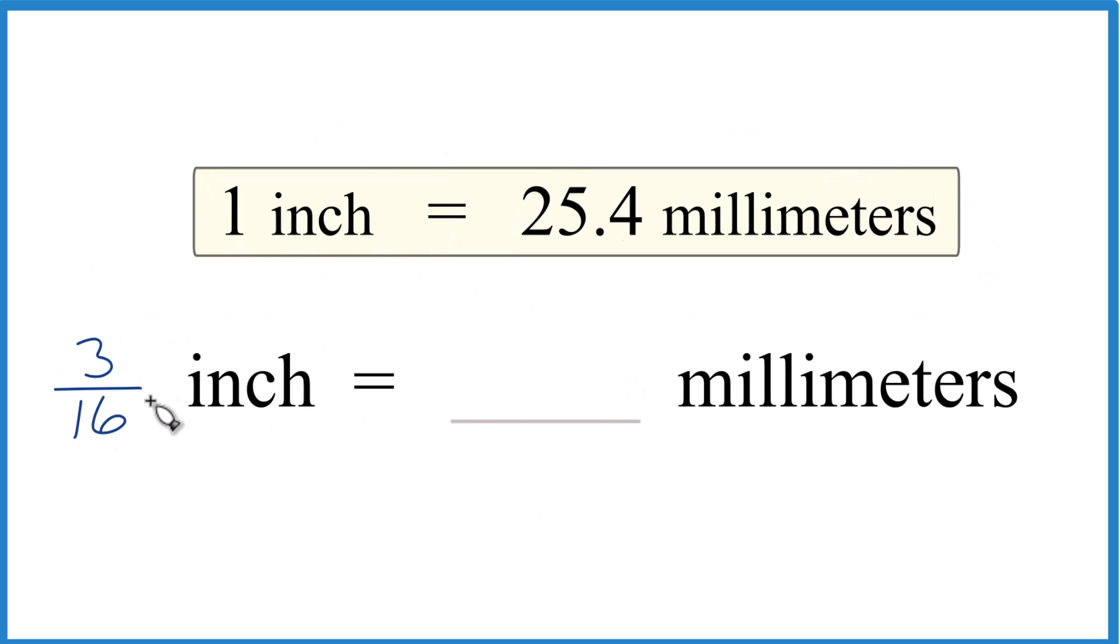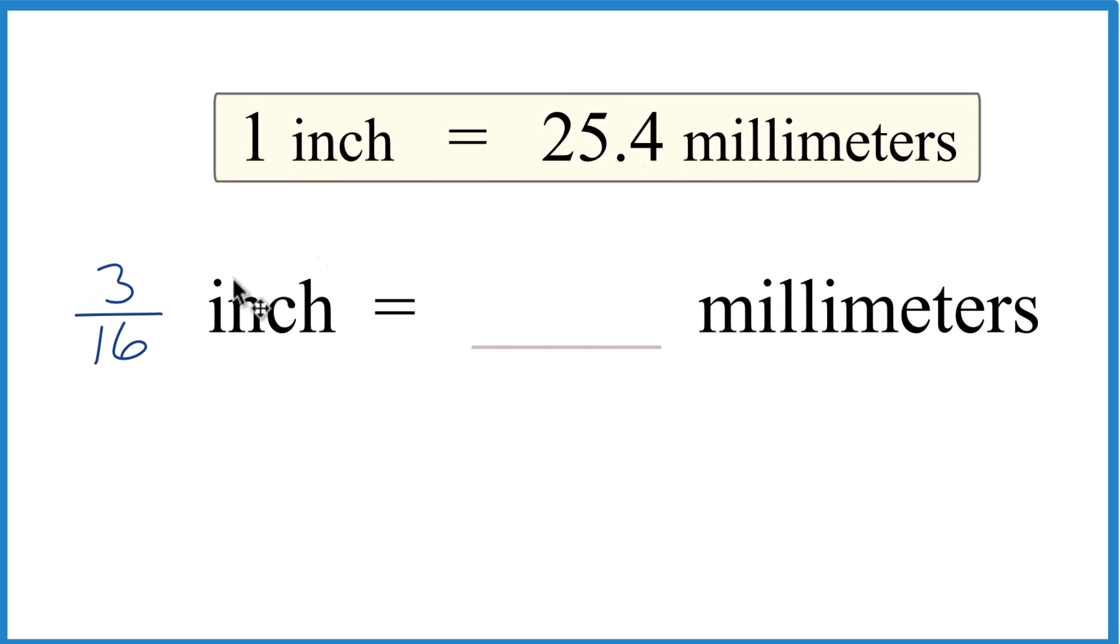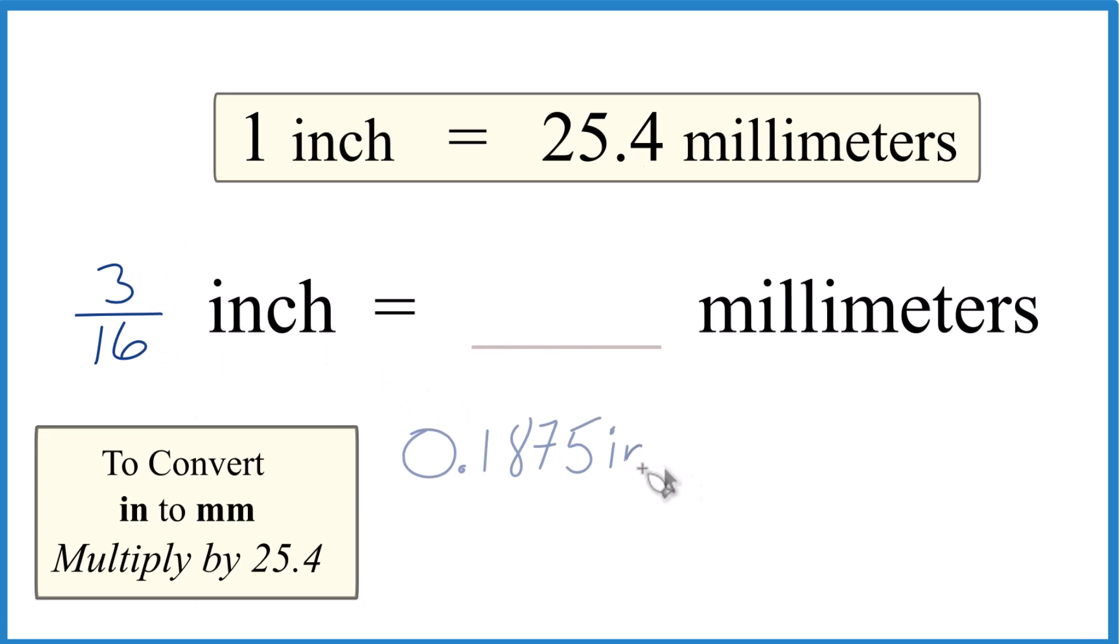Basically what we're going to do is we're going to take 3/16th of an inch and multiply it by 25.4. So it's usually easiest to divide this first on a calculator. You end up with 0.1875 inches. That's the same as 3/16th of an inch.